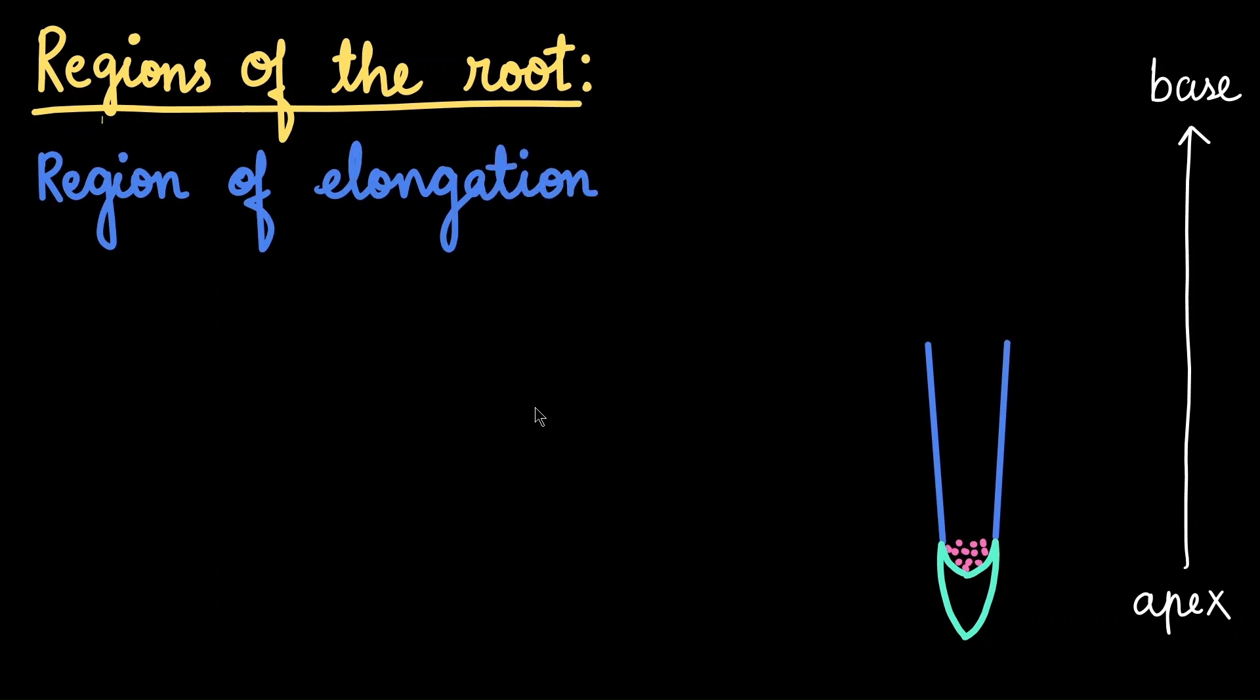Once the new cells leave the meristematic region, they get pushed on to the next region called the region of elongation. Here, the cells no longer focus on division, but it focuses on growing. And growing happens not only in size, but also in the length of the cells. Therefore, this part is responsible for the lengthwise growth of the roots. So due to which you can see that the roots are penetrating deeper into the soil in search of water and nutrients.